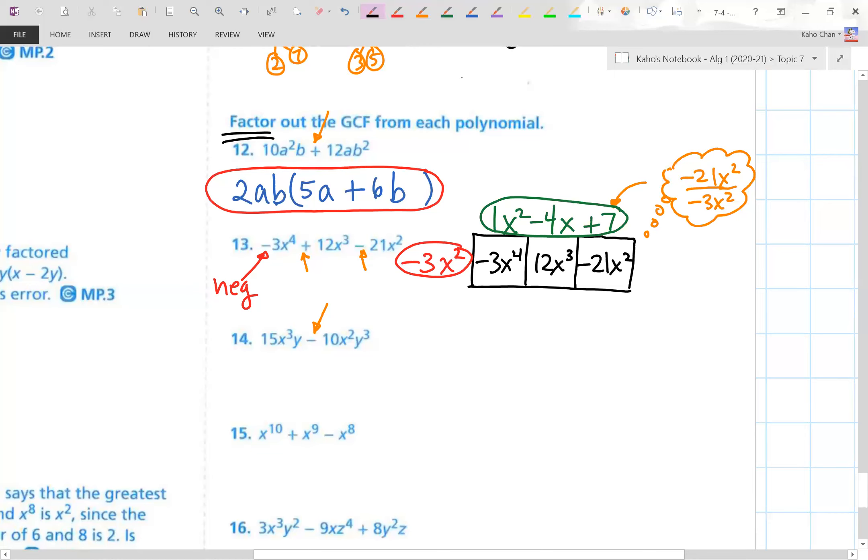A lot of times I should line this up a little bit. Let's move it over. And I'll just put it underneath right here. There we go. That works. 15 divided by five is three. X cubed divided by x squared is x. Y divided by y goes away. Second half, 10 divided by five is two. X squared divided by x squared goes away. Y to the third divided by y is just y squared. There's my answer for the number 14.